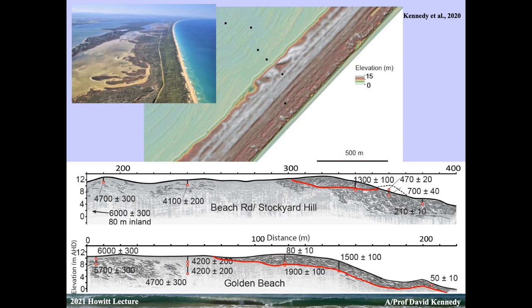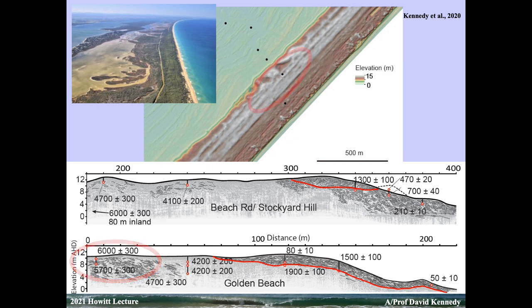The other ages — 6,000 and 5,700 years — are sitting at the back, during what's known as the mid-Holocene optimum. That's where we're predicted to go with climate change. Sea levels were one to one and a half metres higher and sea surface temperatures were about the same in terms of warmth. The coast has been there very recently in the geological past.